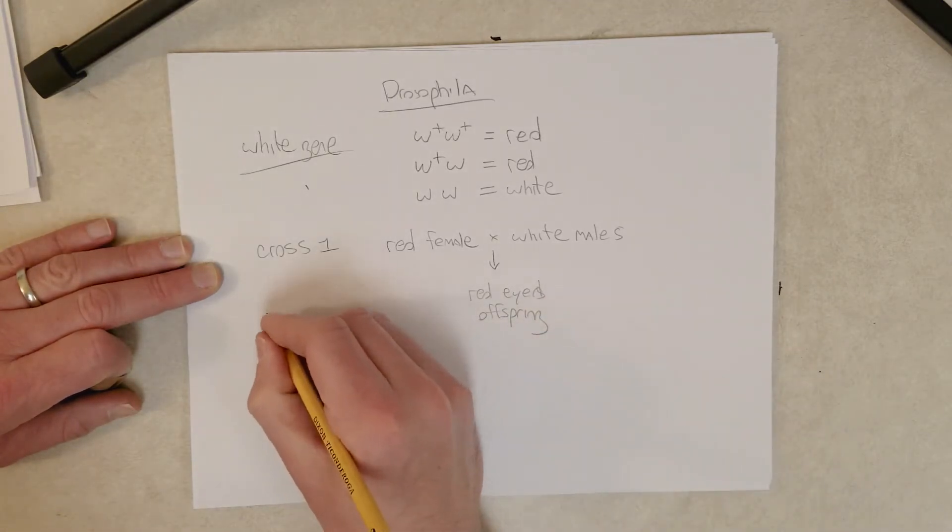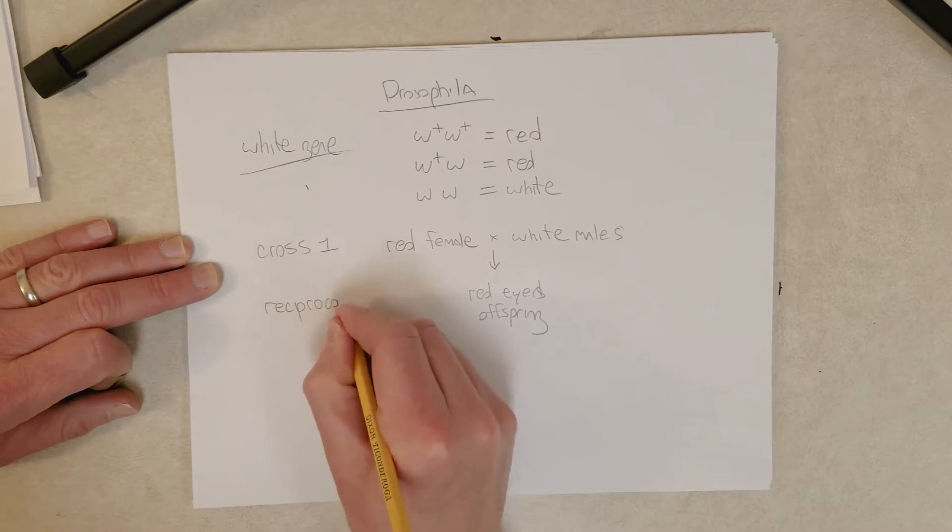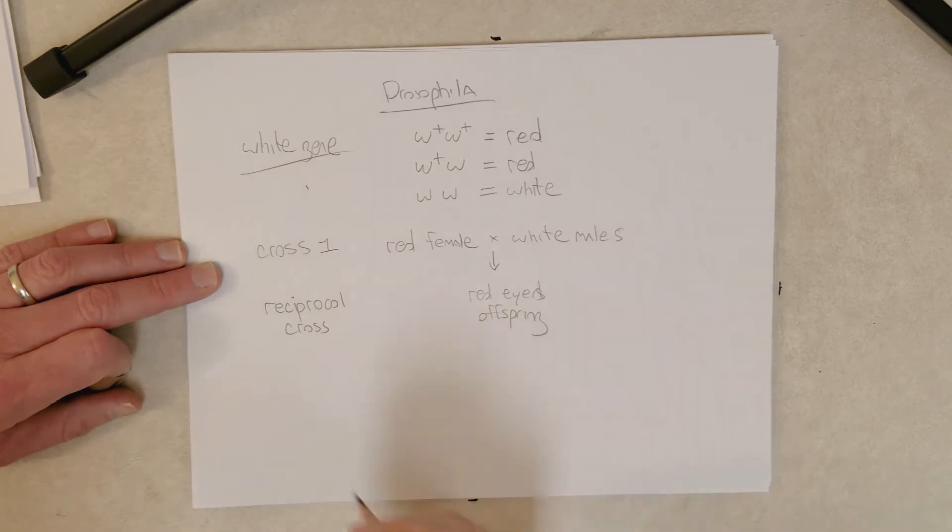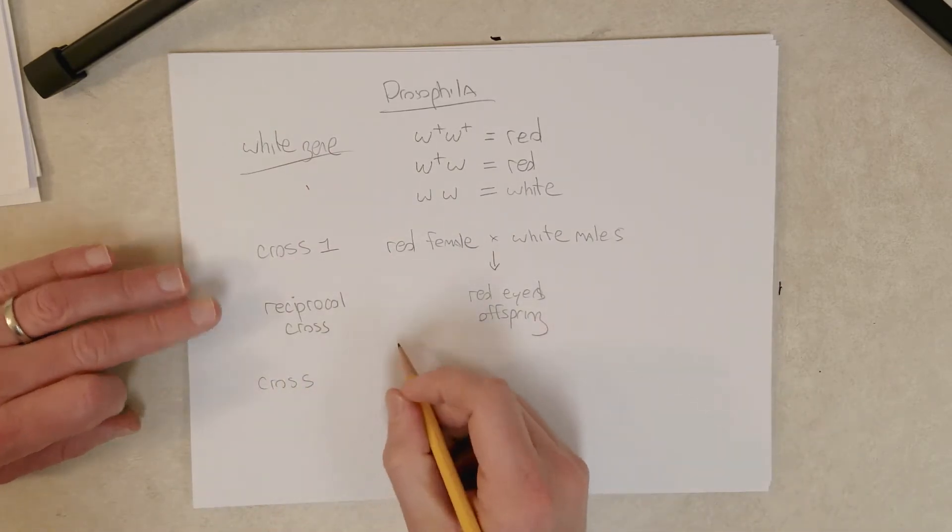But then he did the reciprocal cross. What does that mean? To do a reciprocal cross, you have to have two opposite sexes, and then what you do is you switch the phenotypes with the sexes.